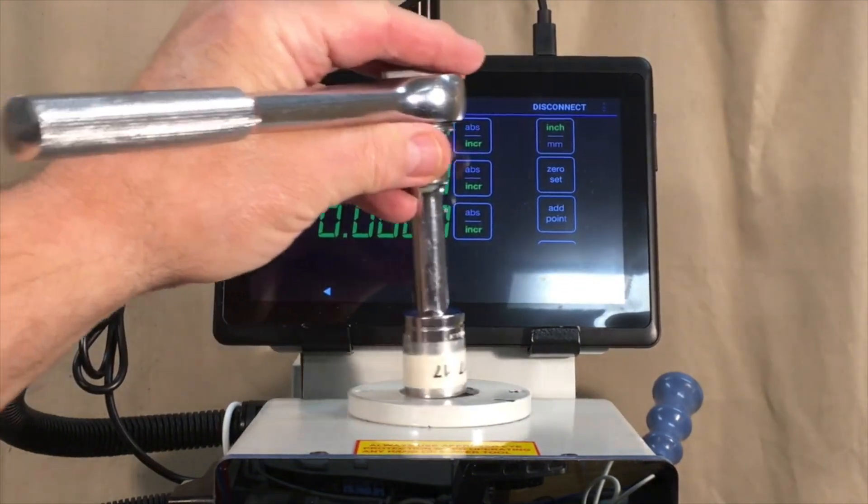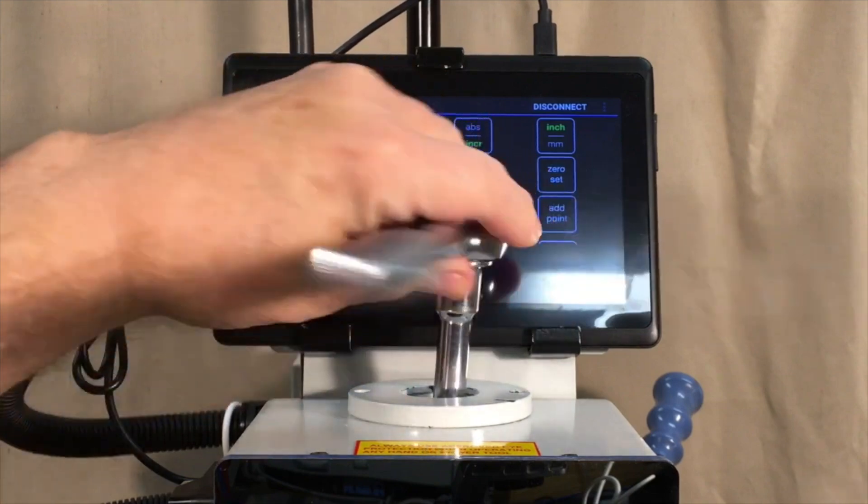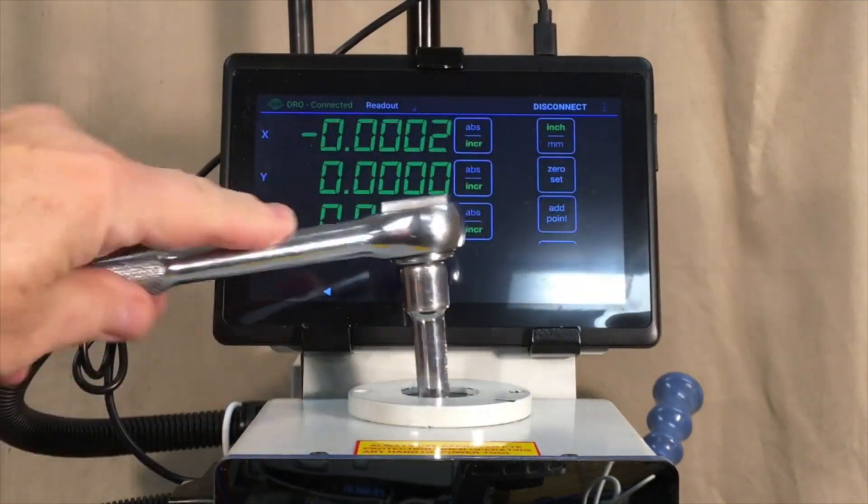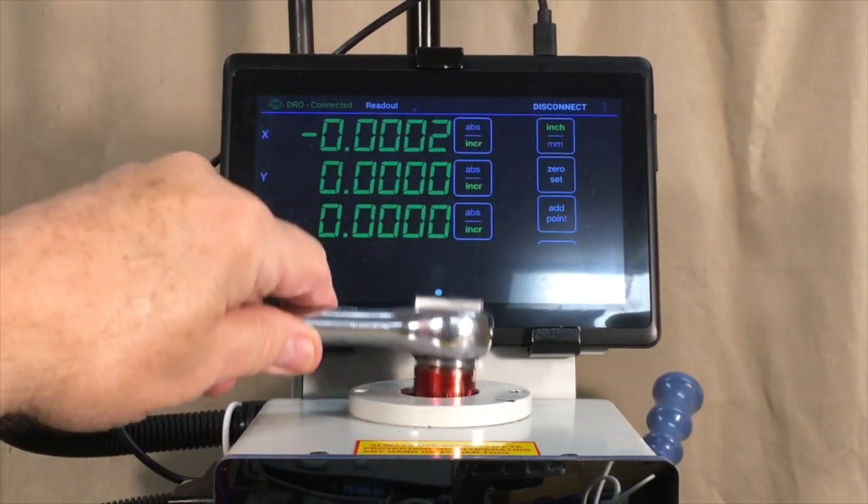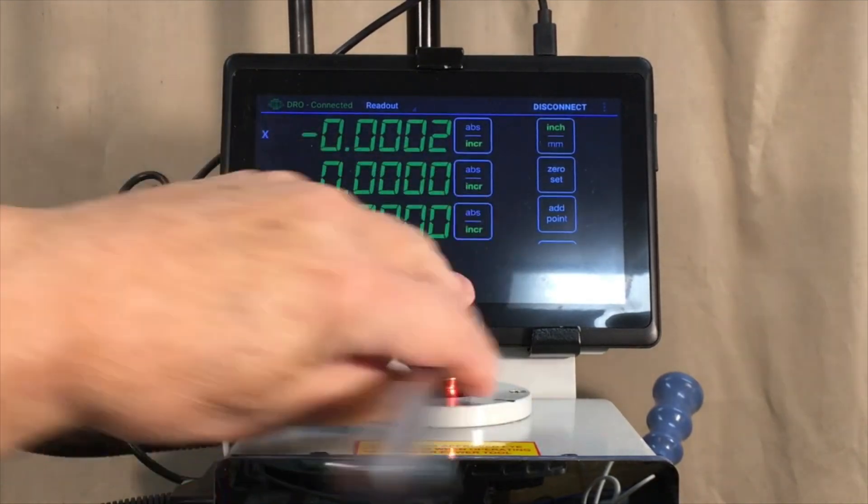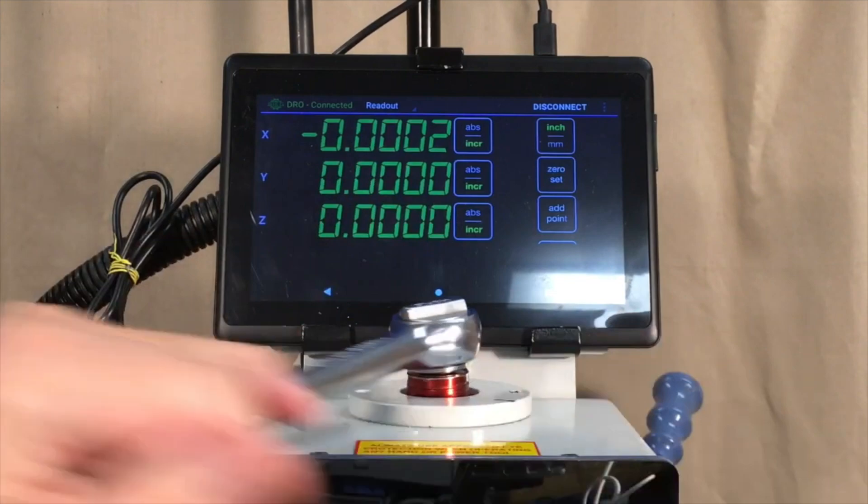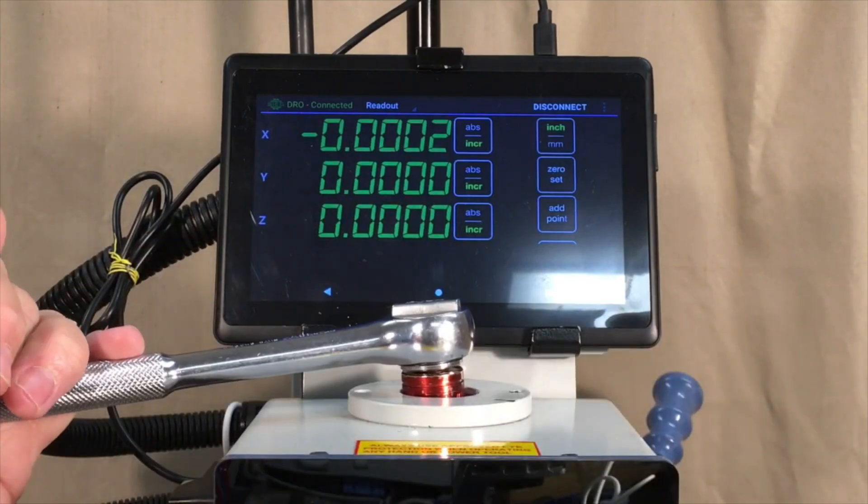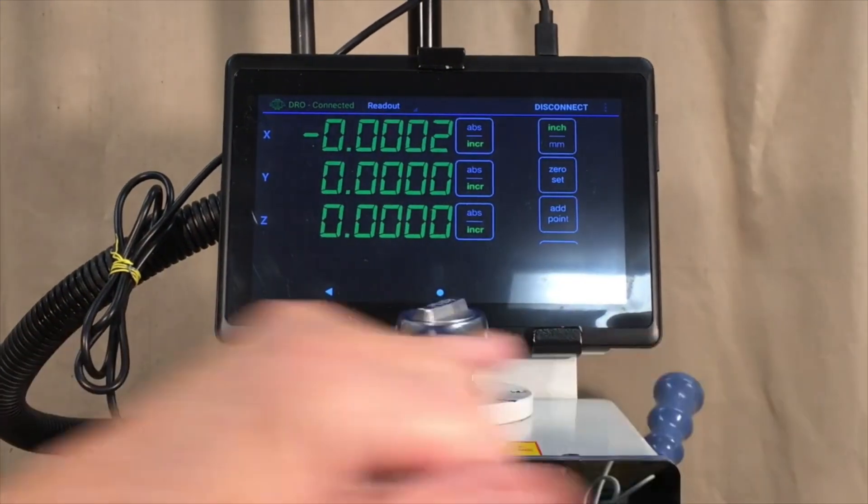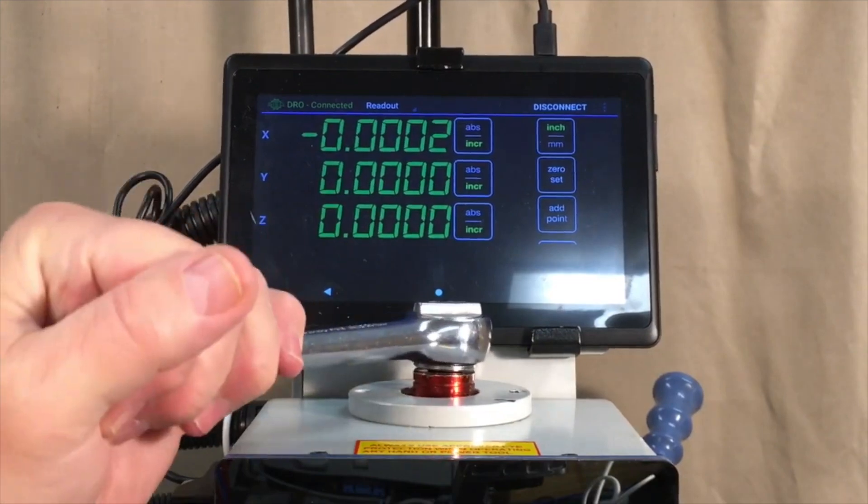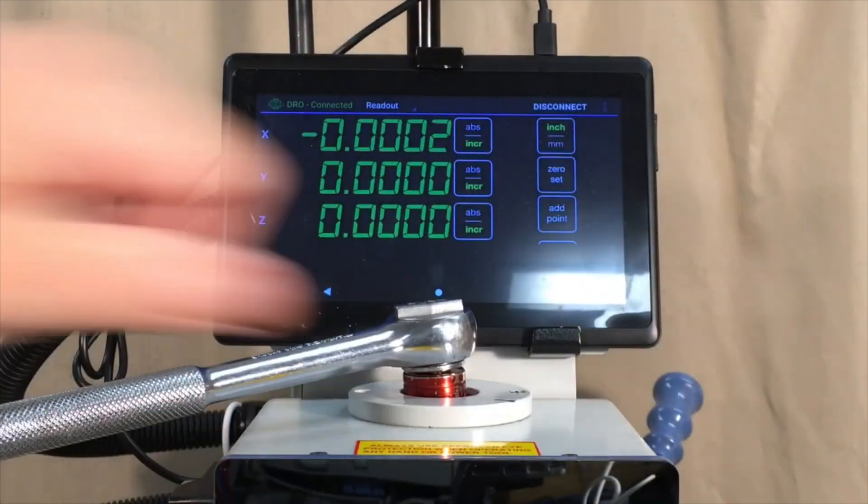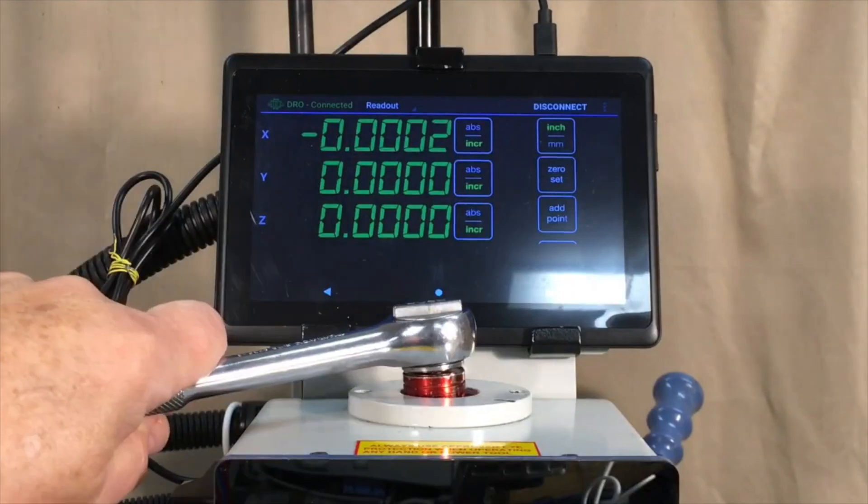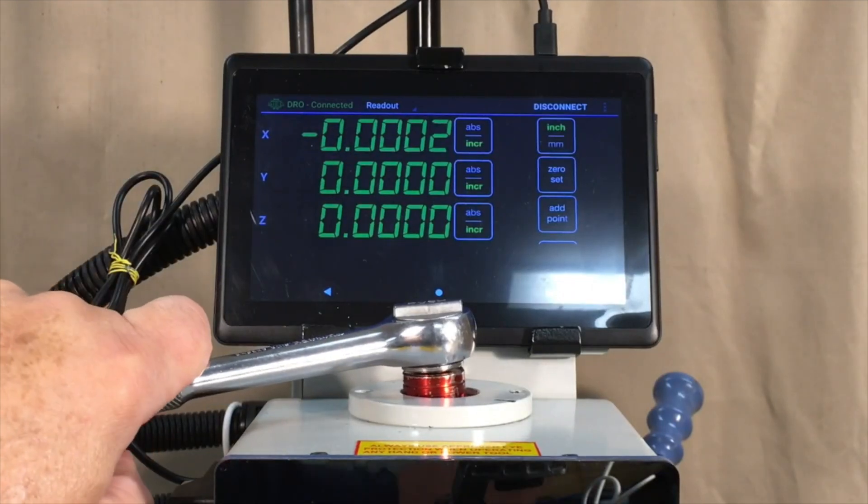So one possibility is just to use a standard ratchet wrench with a 17 millimeter socket. And if I use this extra long socket, I can get by without an extension. So the wrench is pretty well clear of the DRO display. But a problem with that is that the ratchet wrench is not the ideal tool for loosening the drawbar because you have to go back and forth multiple times. So I'm not real enthusiastic about that solution.